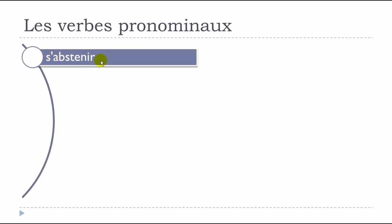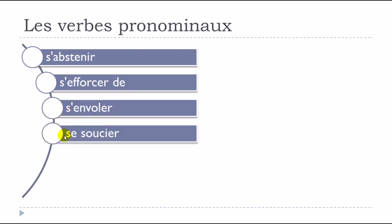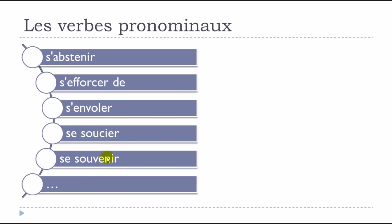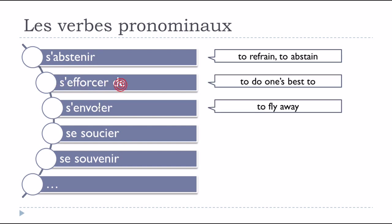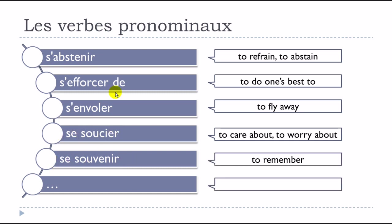More examples: s'abstenir, s'efforcer de, s'envoler, se soucier, se souvenir. It's exactly the same situation - these verbs only exist or are only used as verbes pronominaux, with se before them. They don't exist without it.